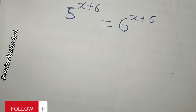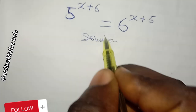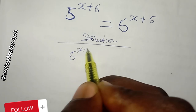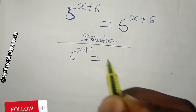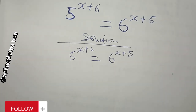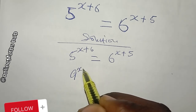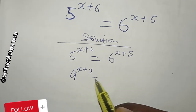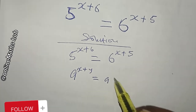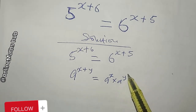Having said that, let's proceed right away. I'll start by writing the solution and the question: 5 power x plus 6 is equal to 6 power x plus 5. The first thing I'm going to do is utilize one of the rules of indices, which says that if you have a power x plus y, you can write this as a power x multiplied by a power y.